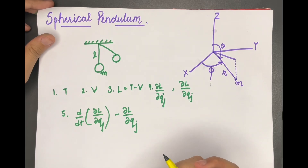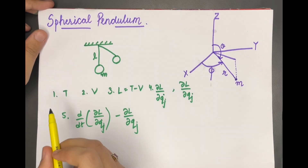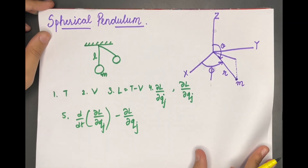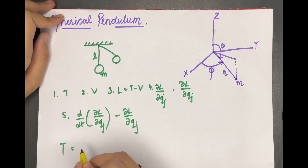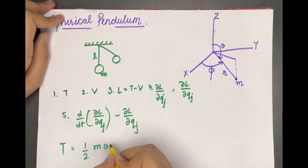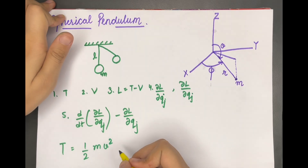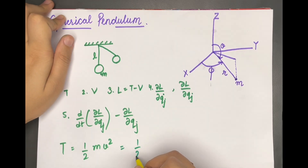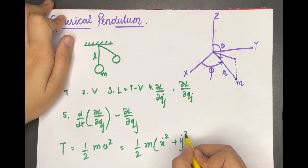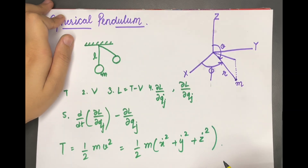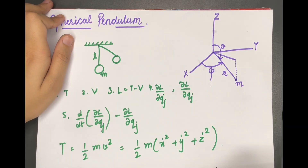Let's start. The first step is to calculate kinetic energy. We know that kinetic energy is ½mv², or we can say it is equal to ½m times (ẋ² + ẏ² + ż²), if we consider velocity in all directions.